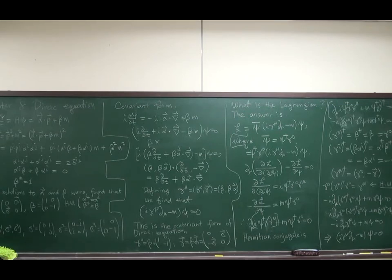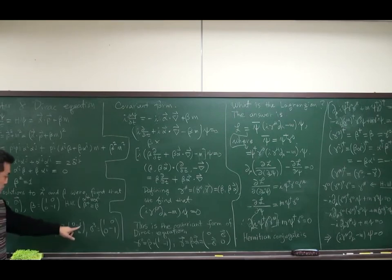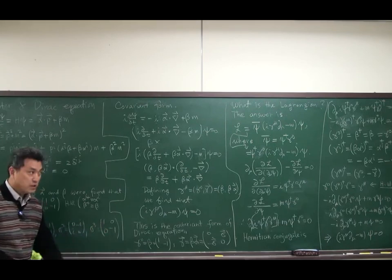But before doing that, using this constraint only, you must be able to find that alpha and beta are Hermitian. And sigma matrices are given in this way. Sigma 1 is 1, 1 in the off-diagonal term. Sigma 2 is minus i, i, and sigma 3 is diagonal, 1 minus 1.